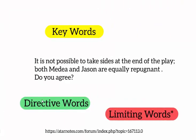For example, if this was our essay question: 'It's not possible to take sides at the end of the play. Both Medea and Jason are equally repugnant. Do you agree?' Take a second and see if you can identify the keywords, the directive words, and the limiting words. Hopefully you can see that the keywords are 'take sides,' 'Medea and Jason,' and 'repugnant' — these are things specific to the text.